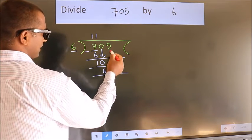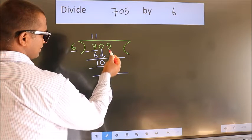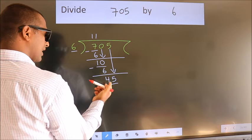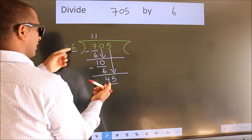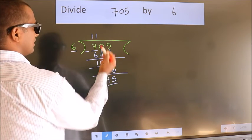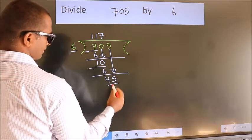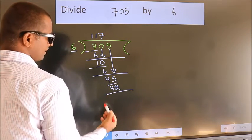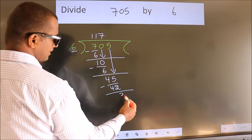After this, bring down the beside number. So 5 down. So 45. A number close to 45 in 6 table is 6 7s 42. Now we subtract. We get 3.